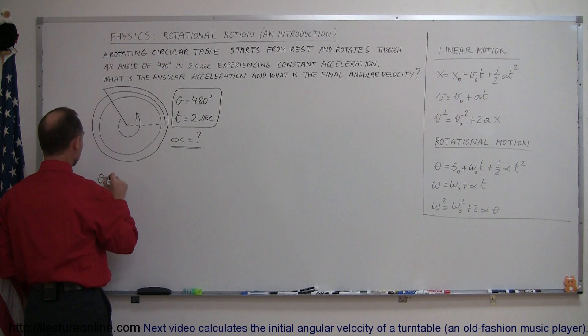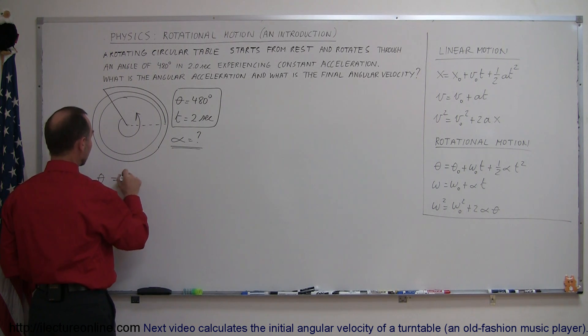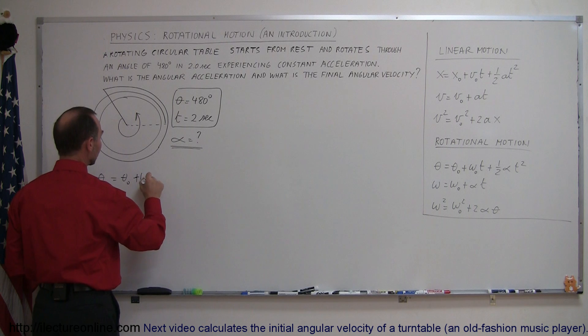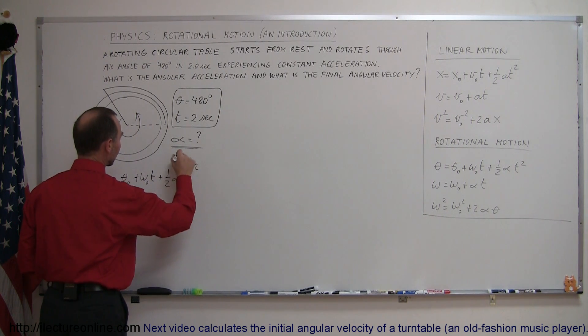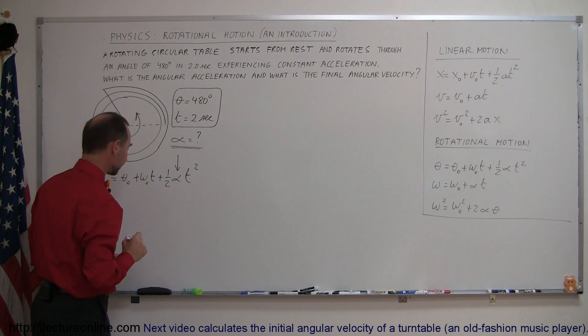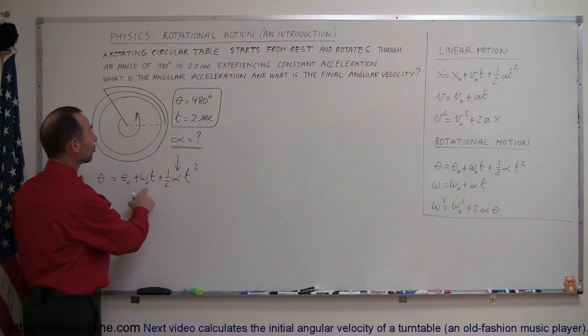Theta equals theta initial plus omega initial times time plus one-half alpha t squared. This is the variable we're looking for. Notice that we're starting from rest.